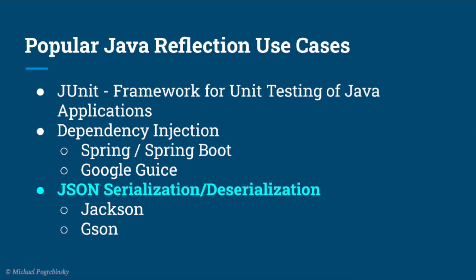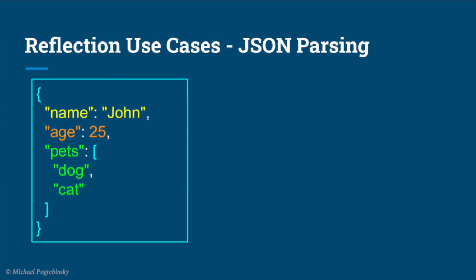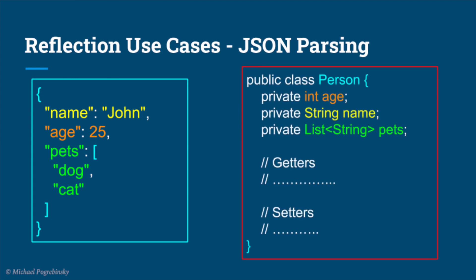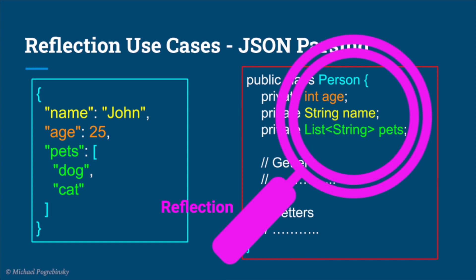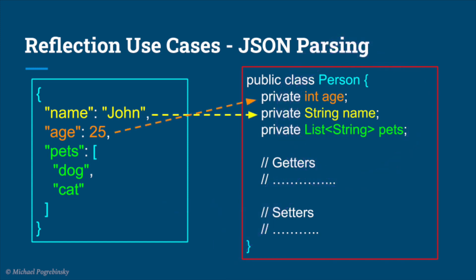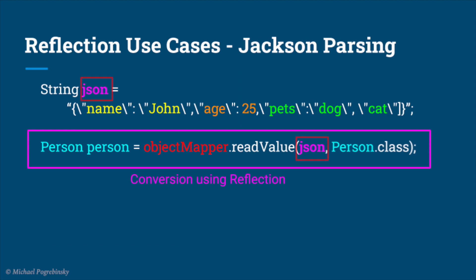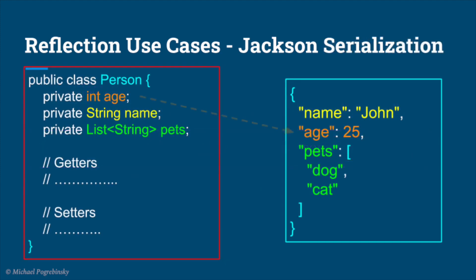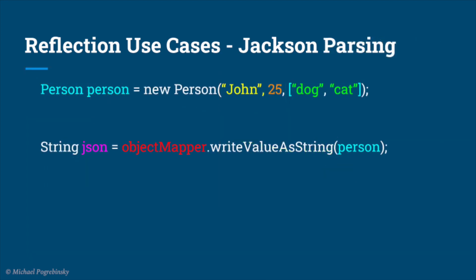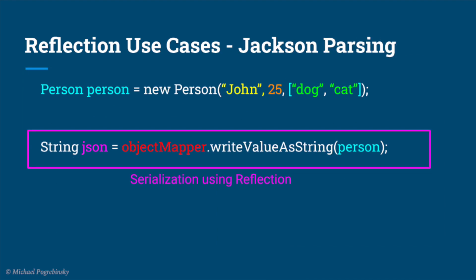Another use case is libraries that perform conversion between a protocol like JSON and Java objects. Given a JSON string as an input, a library like Jackson or Google Gson can inspect a given class using Reflection, analyze all its fields, and populate them with values taken from the JSON string solely based on the field names. Users of such a library can do it essentially with just one line of code — all they need is to provide the JSON text input and the type of object they want to convert the JSON to. Similarly, any Java object of any class can be converted to JSON just as easily, and all of that functionality can be provided as a single method call, while all the magic happens under the hood using Reflection.